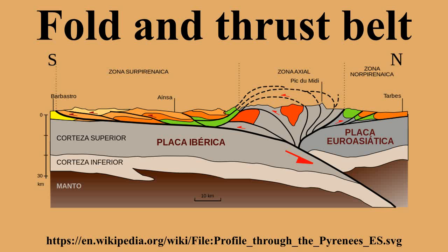Thrusts that form within the belt rather than at the thrust front are known as out-of-sequence. In map view, fold-and-thrust belts are generally sinuous rather than completely linear, where the thrust front bulges in the direction of tectonic transport — a salient is formed. Between the bulges, the areas are known as recesses.